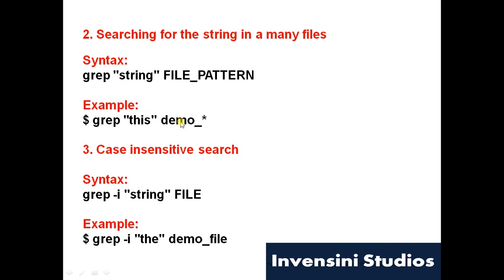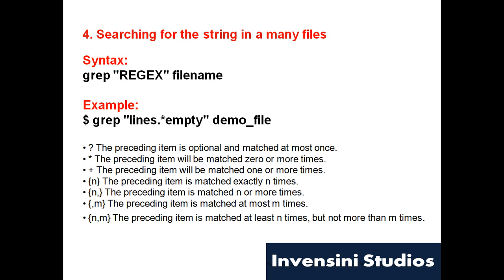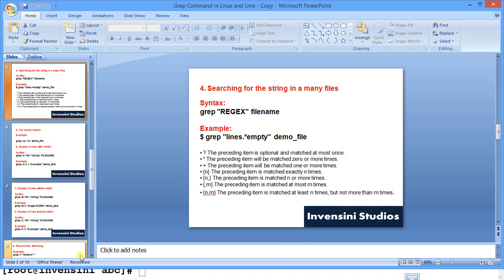Suppose you want to search across different file formats — for example, both a text file and a CSV file with the same name. You can use the wildcard star to cover more than one file format, or use star in place of the filename to search everything. You can also do a case-insensitive search using hyphen-I (-i), and you can use regular expressions to search for any pattern you want.